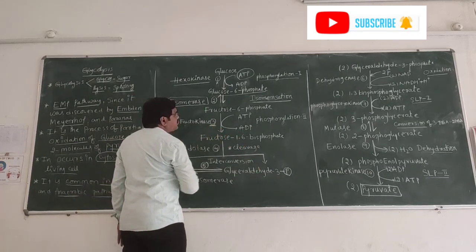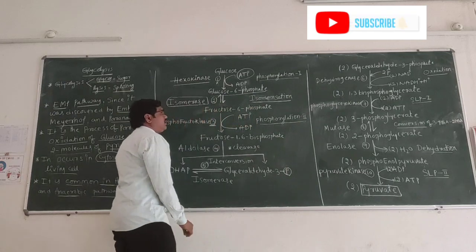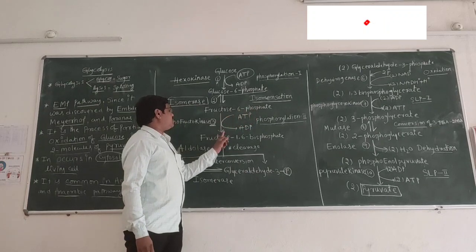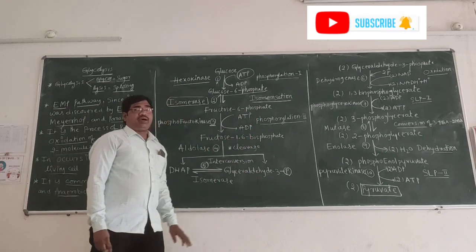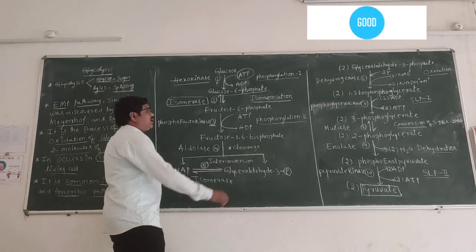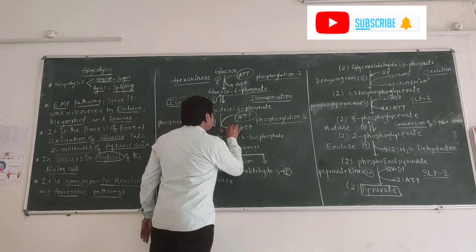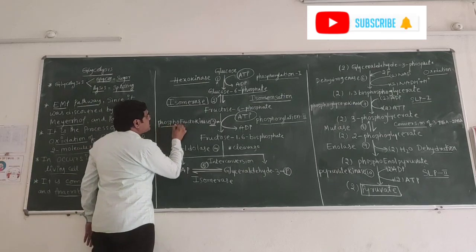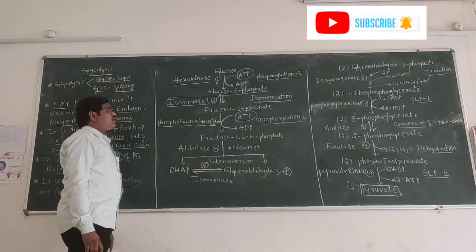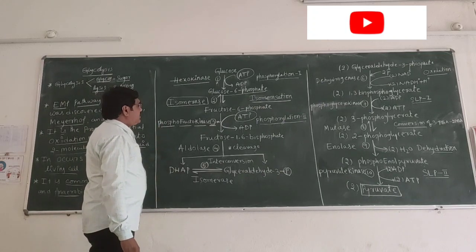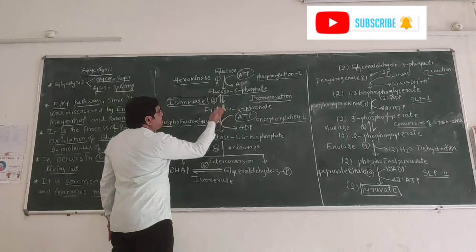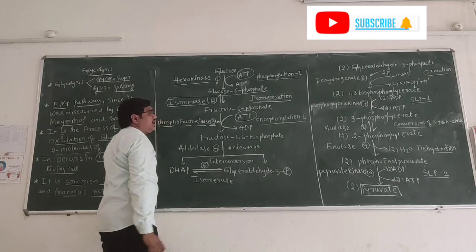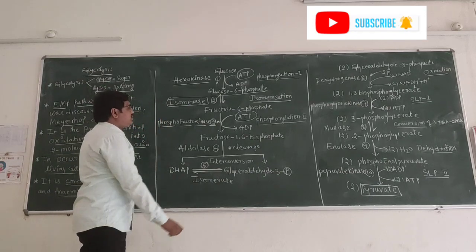The third reaction is again phosphorylation. Fructose-6-phosphate is converted into fructose-1,6-bisphosphate. Here, one ATP is also consumed in this reaction. This reaction is catalyzed by the enzyme phosphofructokinase. So in the glycolysis pathway, the first reaction and the third reaction both involve phosphorylation.